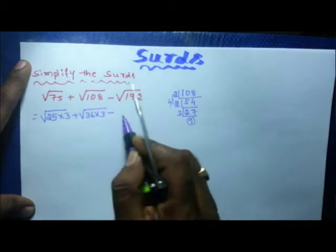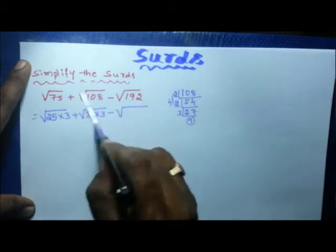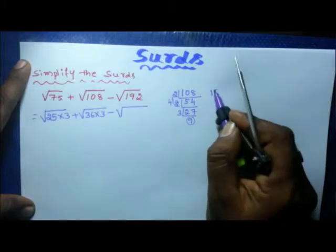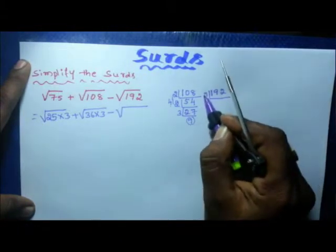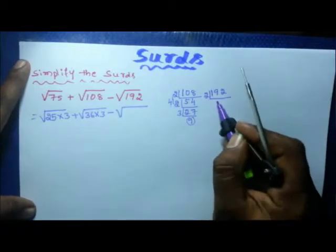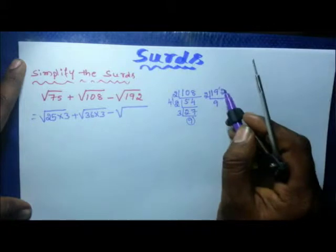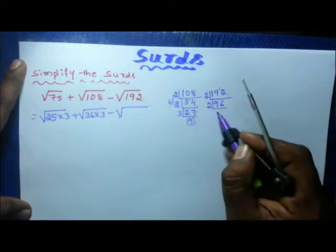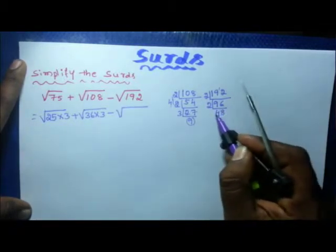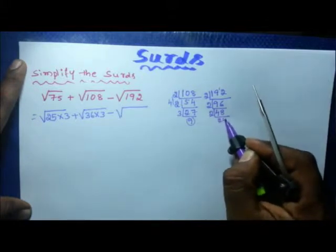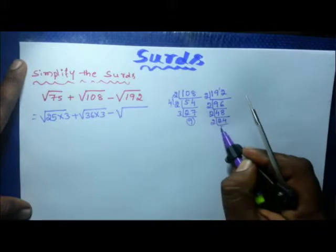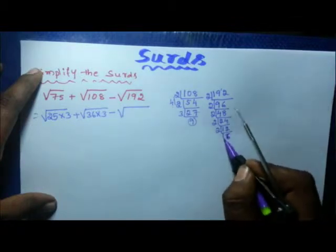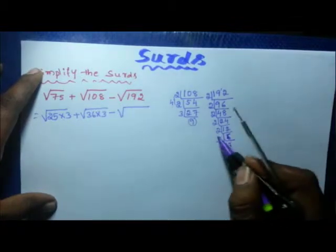So we write plus square root of 36 into 3. Similarly, we find the factors of 192. For 192, it is also divisible by 2. Dividing repeatedly by 2: 2 into 96, 2 into 48, 2 into 24, 2 into 12, 2 into 6, giving us factors of 2 repeatedly.